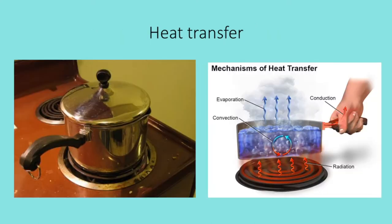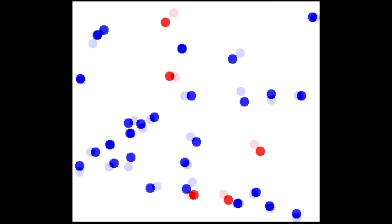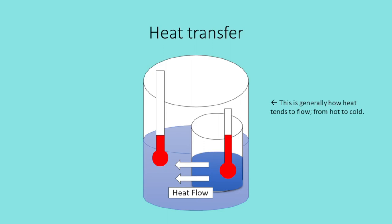Take heat transfer, for example. If you heat up a stovetop and place a metal pot onto it, heat transfers from the stove to the pot. The microscopic reason for this is that the stovetop's molecules are excited and moving quickly, bumping into the slower molecules of the cold pot and causing them to accelerate. The more macroscopic explanation, however, is simply that heat transfers from areas of high temperature to areas of low temperature.